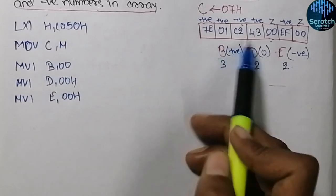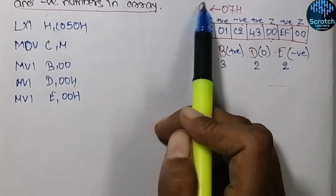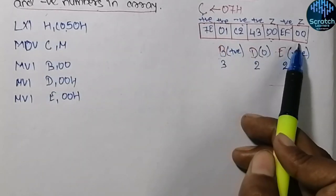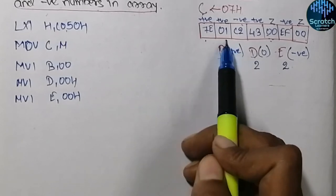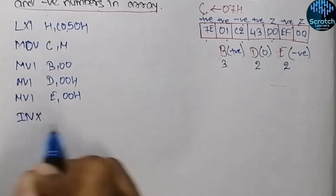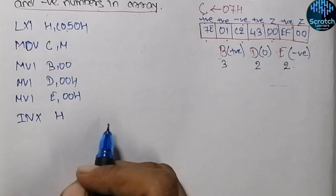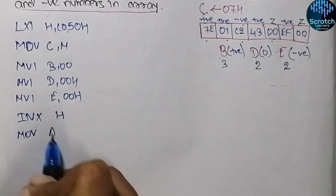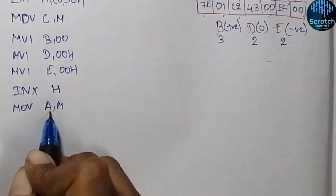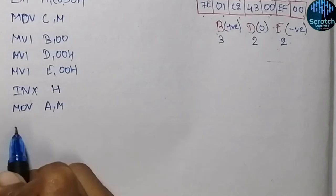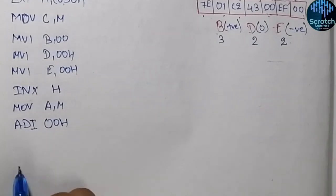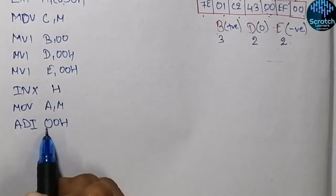Now we will start inputting all the elements one by one. Since I have inputted the value of C from C050 hex, the elements will be at sequential locations C051, C052, C053 and so on. I will input the first data using the INX H instruction and it will be moved into the accumulator so that I can perform operations on the data. After moving it into the accumulator, we will add this data with 00 hex using ADI — add immediate — so the content of the accumulator will be added with 0.